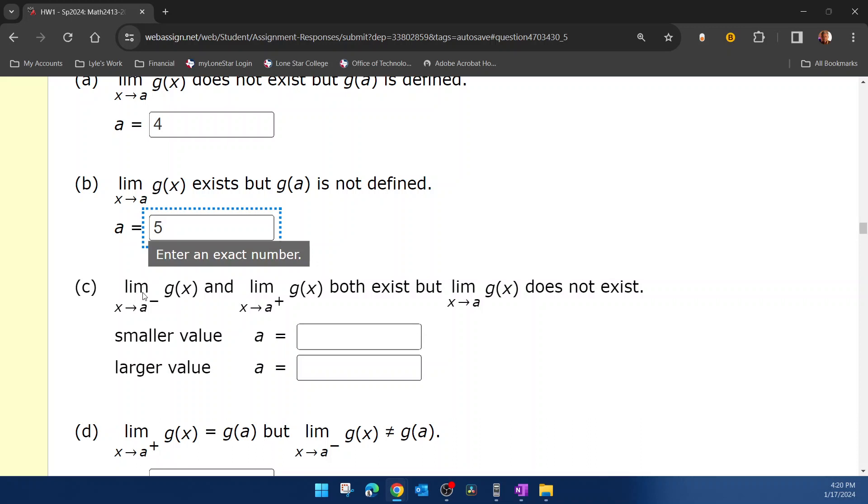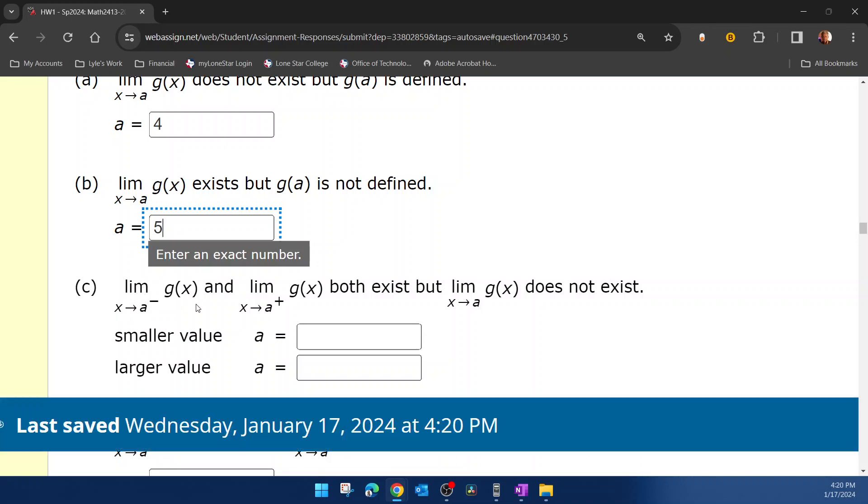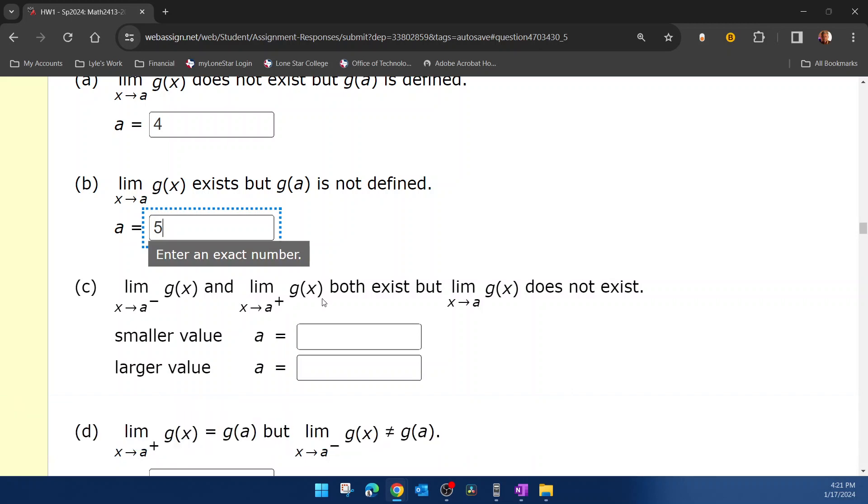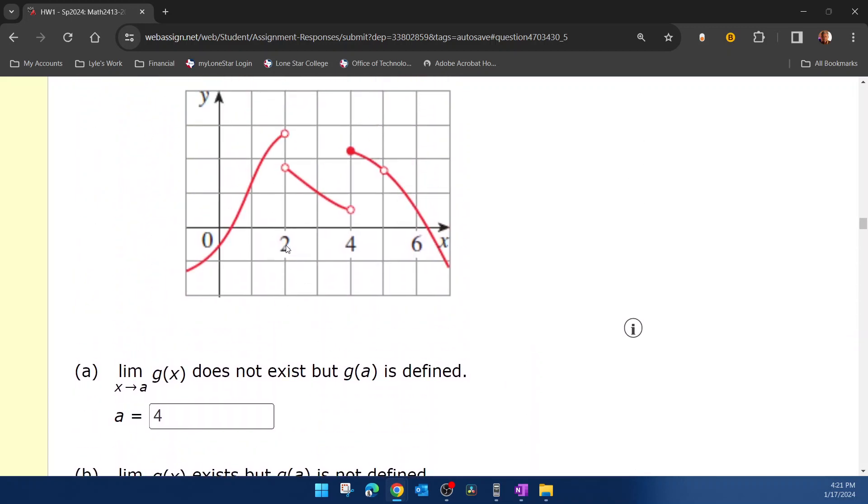Now part c, if we approach a from the left and from the right, both exist, but the limit does not. So we need to be approaching a different height as we approach a from the left and the right for the limit to not exist. And apparently there's going to be two of those. So that's going to be 2 and 4.